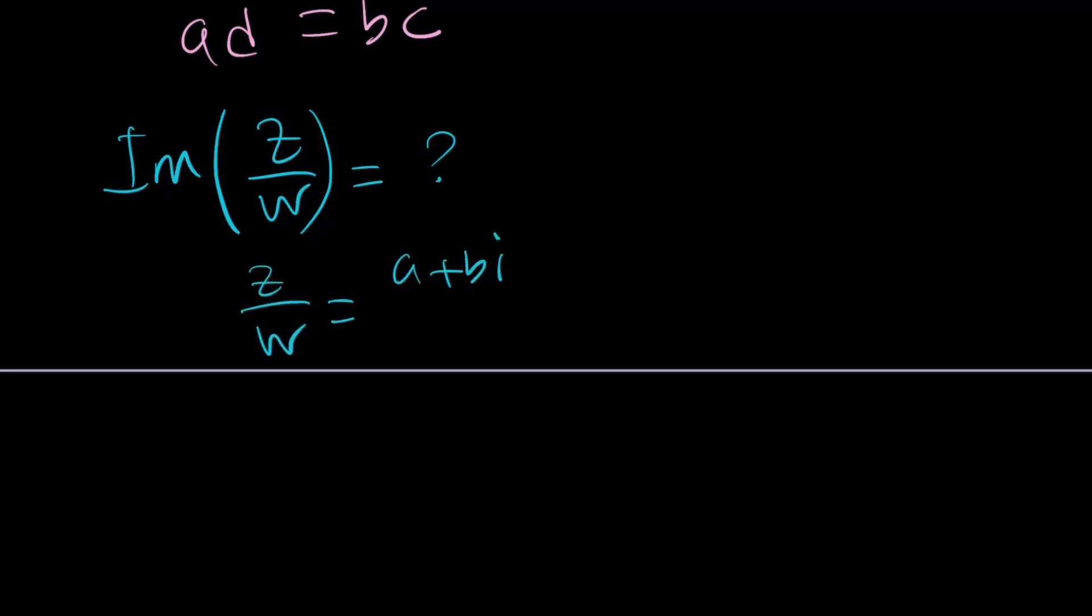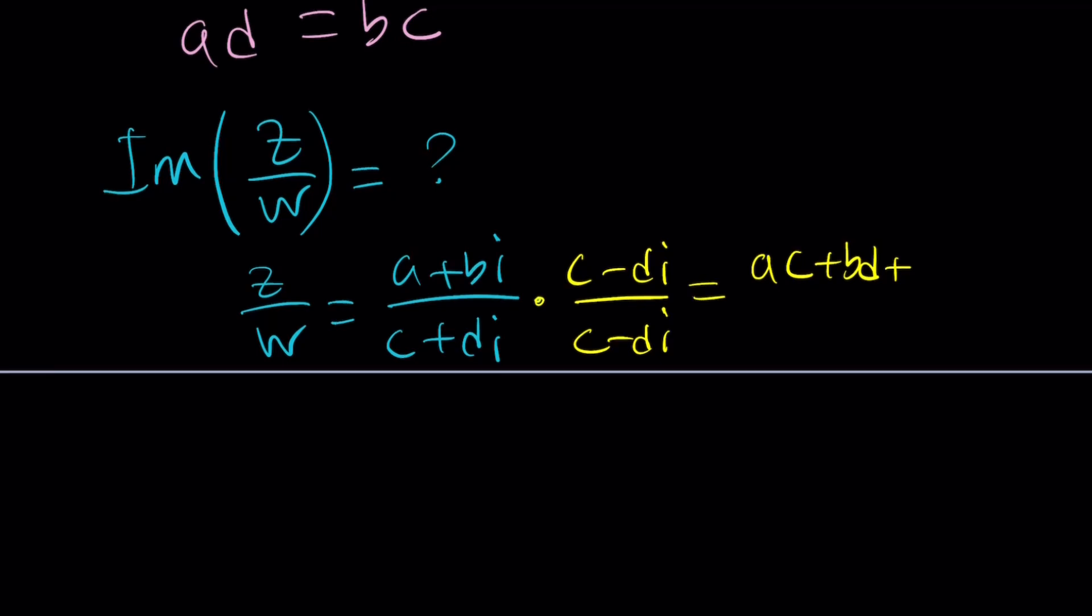Well, Z was A plus BI and W was C plus DI. And now we're going to multiply by the conjugate, C minus DI. And then when you distribute here, you're going to get AC plus BD. And then the imaginary part is just going to be BC minus AD multiply by I.